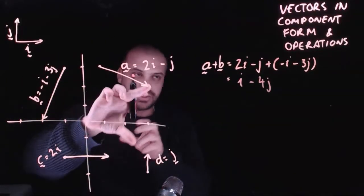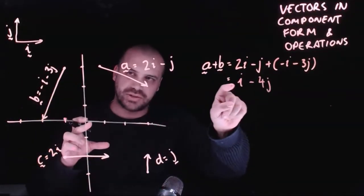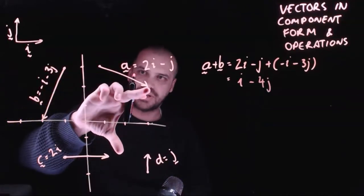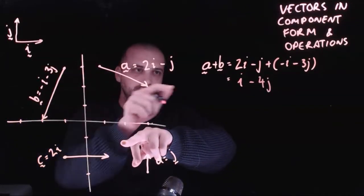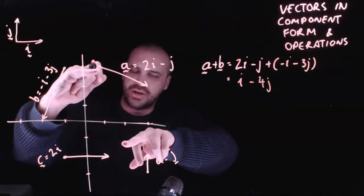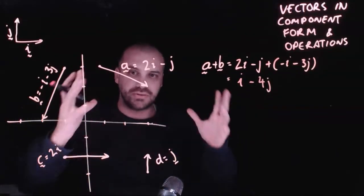Now if we were to actually do this graphically, we would see that answer is correct. If I took this over to here, you can see from there to there, I'll be moving one across, one i, and I'd be moving four down, negative four j.